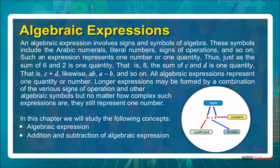An algebraic expression involves signs and symbols of algebra. These symbols include the Arabic numerals, literal numbers, signs of operations, and so on. Such an expression represents one number or one quantity. Thus, just as the sum of 6 and 2 is one quantity, that is 8, the sum of c and d is one quantity, that is c plus d.